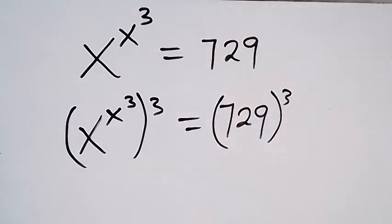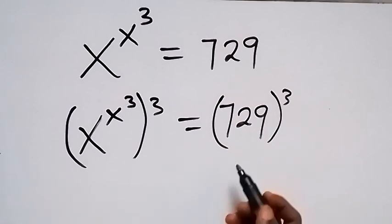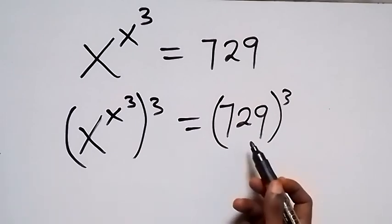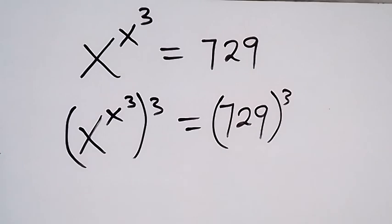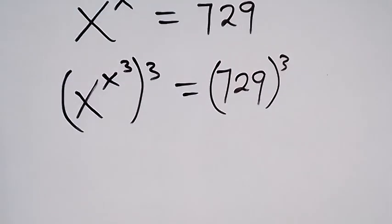Then, we can express 729 as 9 raised to power 3. That's 9 times 9 times 9.